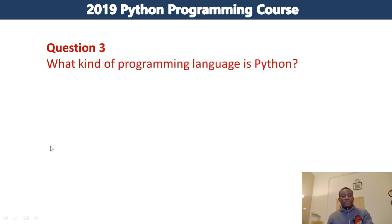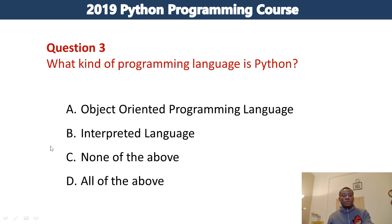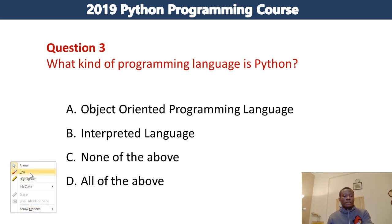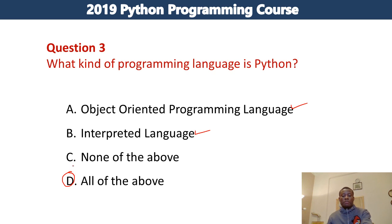What kind of programming language is Python? The options are: A, object-oriented programming language; B, interpreted programming language; C, none of the above; D, all of the above. Python is both an object-oriented programming language and also an interpreted language, so the answer is D — all of the above.